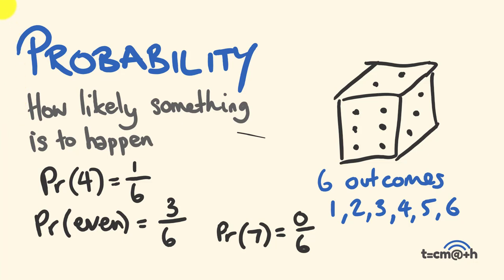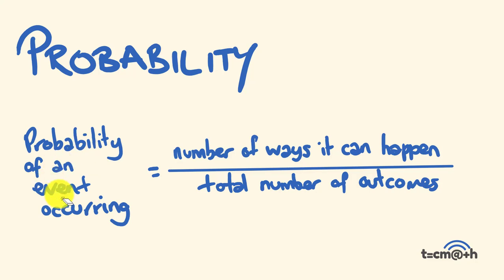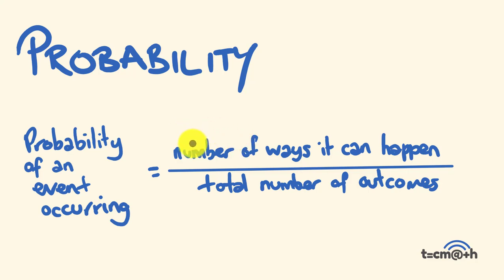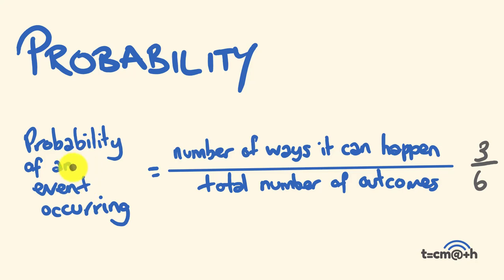There's a basic rule for probability: the probability of an event occurring is equal to the number of different ways it can occur — the number of favourable outcomes — over the total number of outcomes. For example, the number of ways a dice could be rolled to give an even number: there are three different ways, so it would be 3 over a total of 6. The probability of rolling an even number would be 3 out of 6.